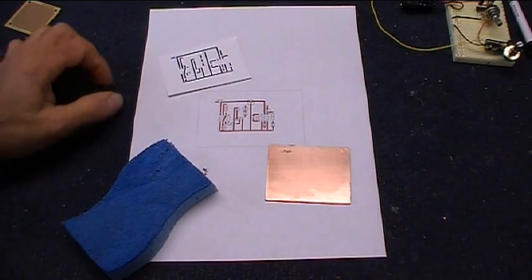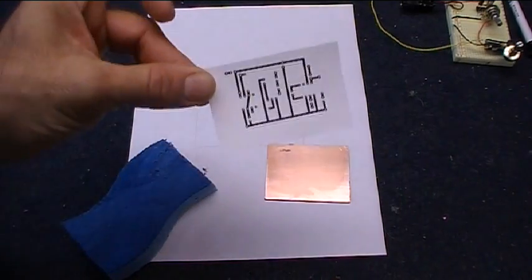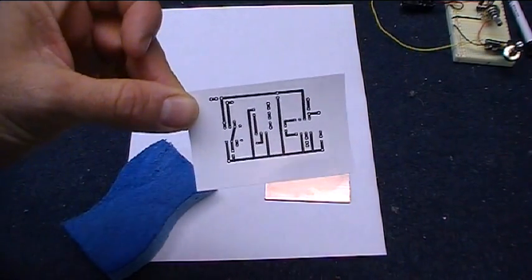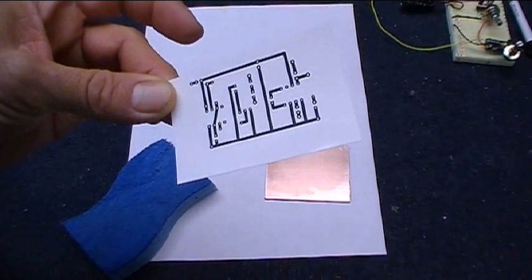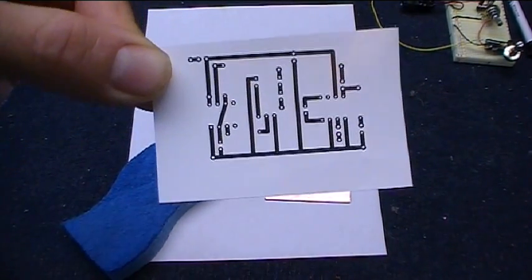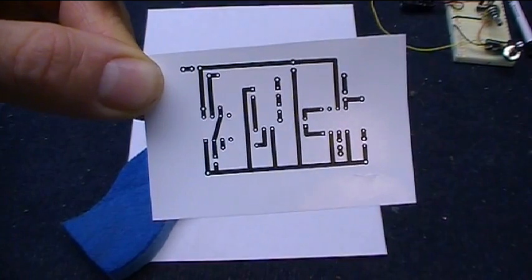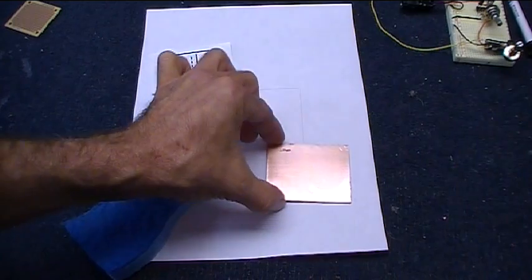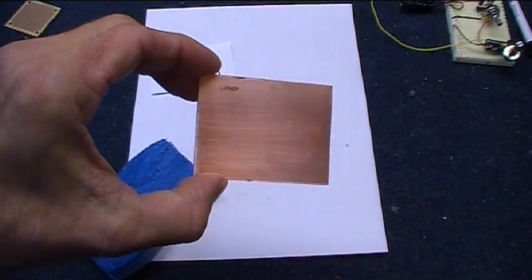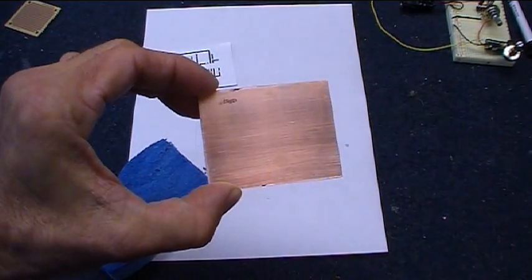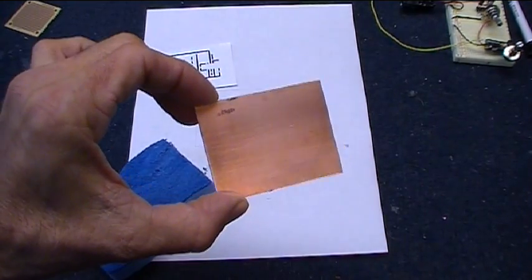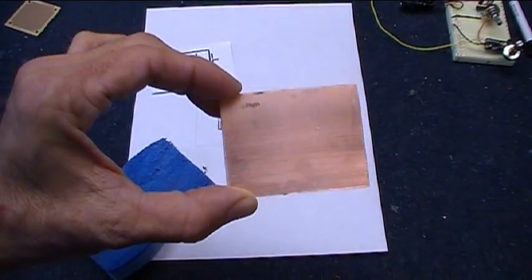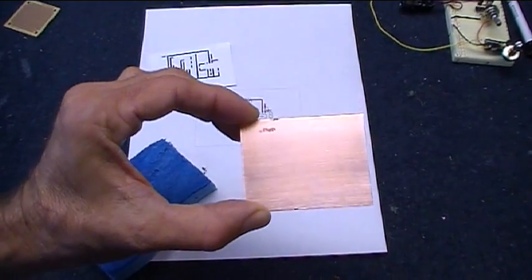I decided to give this a try with the old toner transfer. This is a piece of photo paper with my circuit printed on it, two passes through the printer. If you're really careful you can get the registration right on, and two passes gives me more toner to transfer onto the copper. And I cleaned my piece of copper that I had laying around. It got a little oxidized. Sandpaper kind of puts too deep of scratches kind of thing in there. This one had been hit with a little bit of sandpaper before, but I didn't want to abrade it too much this time.